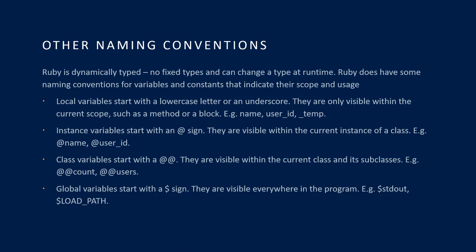Other naming conventions: Ruby is dynamically typed, so there are no fixed types and those can change at runtime. But Ruby does have naming conventions for variables and constants that indicate their scope and usage. Local variables start with a lowercase letter or an underscore and are only visible within the current scope, such as a method or a block. Instance variables start with an at sign (@) and are visible within the current instance of a class. Class variables start with two at symbols (@@) and are visible within the current class and its subclasses. Global variables start with a dollar sign ($) and are visible everywhere in the program.